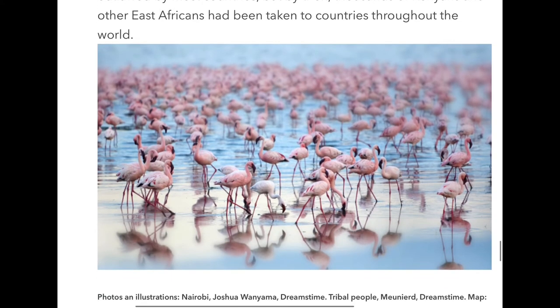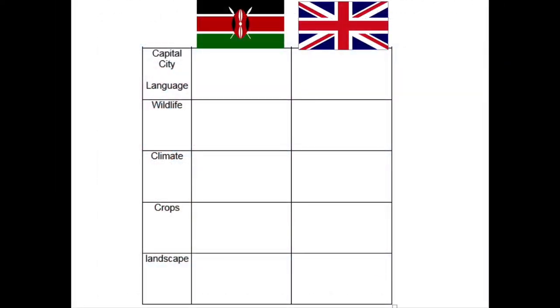It ends with a beautiful picture of some flamingos - maybe not an animal you'd think of! There are big lakes in Kenya where thousands of flamingos live. Maybe you could have a look on the internet and see if you can find out any more facts. In your pack you should have a sheet - the flags aren't coloured in on yours so you can colour those in later. On one side we've got Kenya.